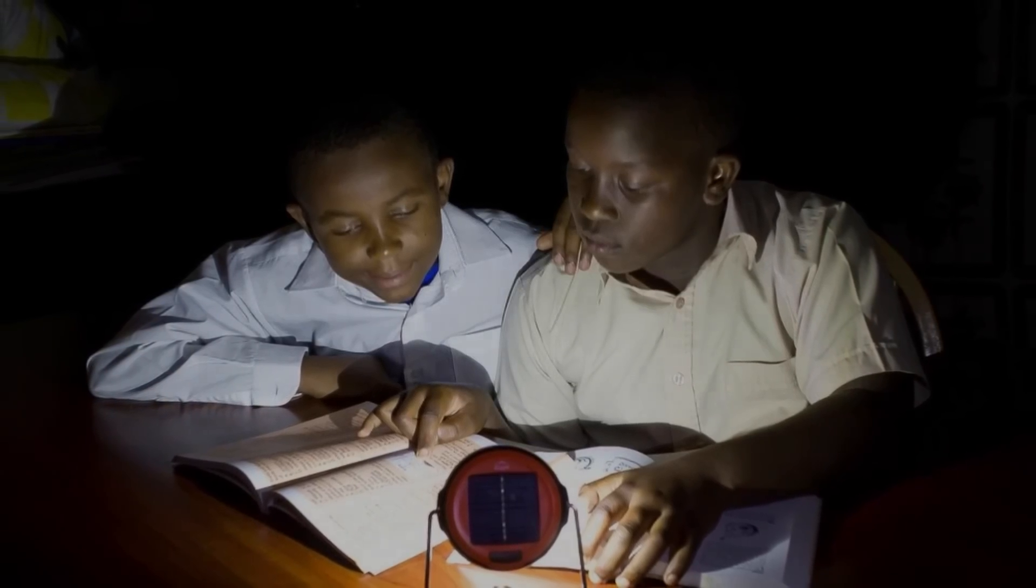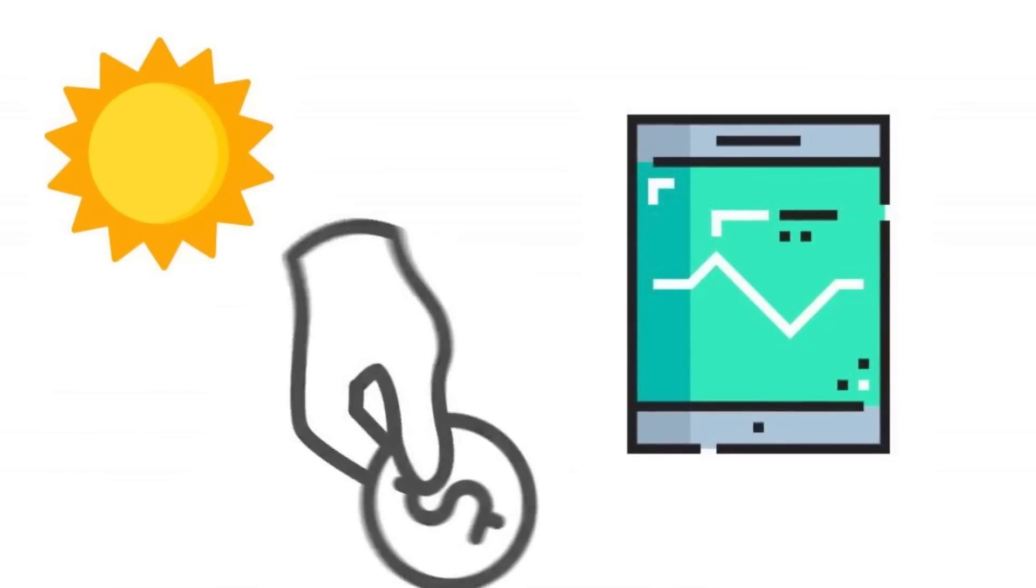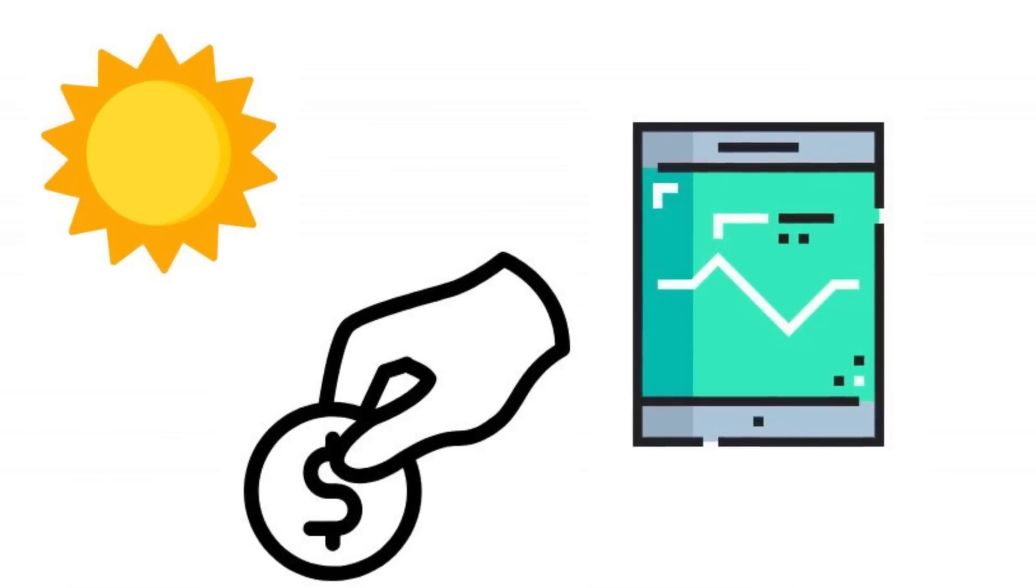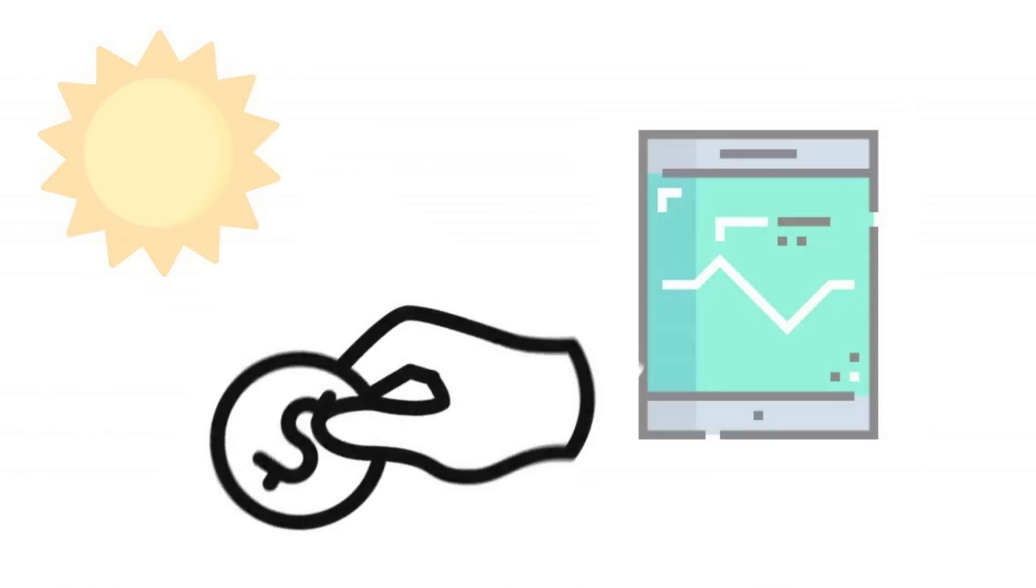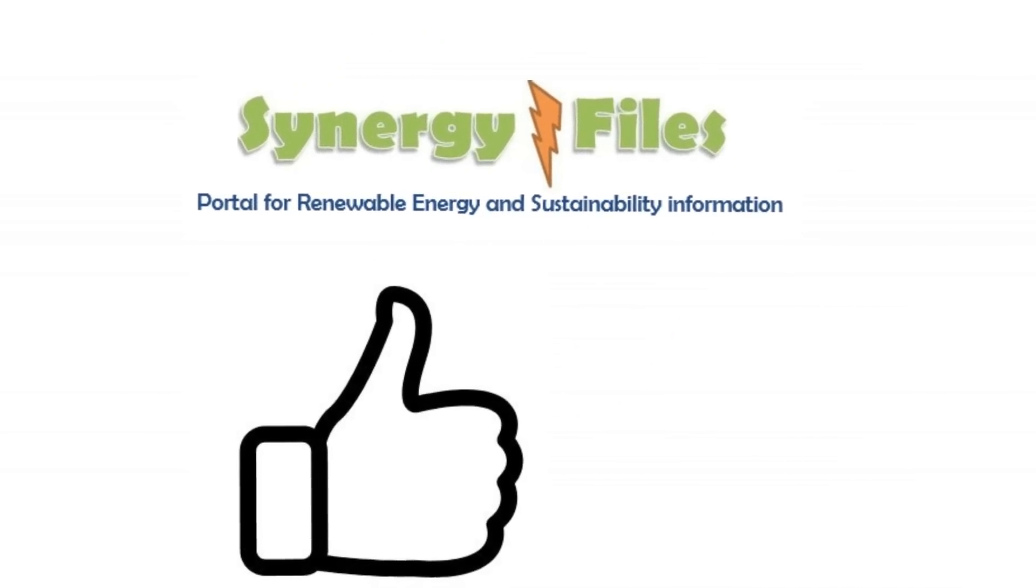So there you go, these were the five solar gadgets that are very much affordable. Not only you can use them yourselves, but you can also donate them to enrich the lives of many that are not that lucky. If you learned something from the video, please hit the like button. For more such videos, subscribe to the channel. Thank you for your attention.